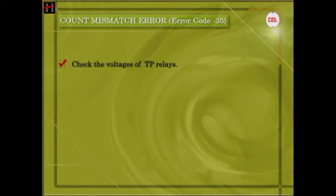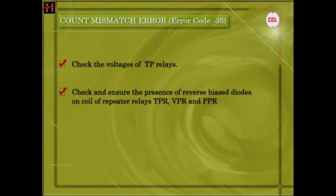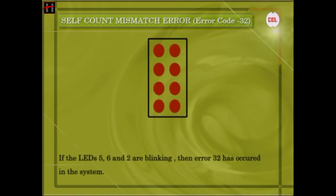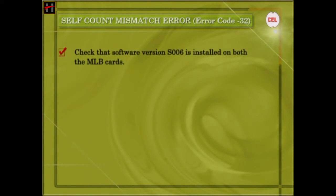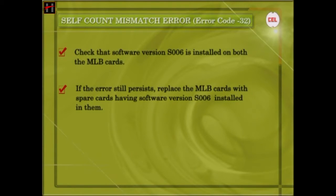Check the voltage of the TP release and check the presence of the reverse bias diodes on the coil of repeater relays TPR, VPR, and PPR. Self-Count Mismatch Error: If the LEDs 5, 6, and 2 are blinking, then Error 32 has occurred in the system. This error occurs when software detects the counts of the MLB cards in the local unit. To rectify: first, check and ensure that software version S006 is installed in both MLB cards; second, if it persists, replace the MLB card with spare cards having software version S006 installed.